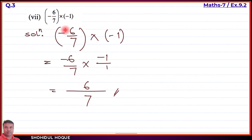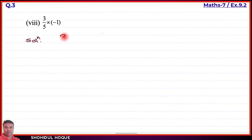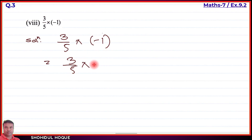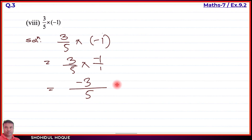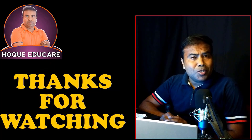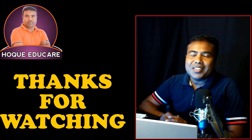Part number 8: 3 by 5 into minus 1. Writing as 3 by 5 into minus 1. Numerator: 3 times 1 is 3; minus sign stays, denominator: 5 times 1 is 5. Answer is minus 3 by 5. That completes Question number 3, parts 1 to 8. Please like the video and subscribe to the channel. See you in the next video.